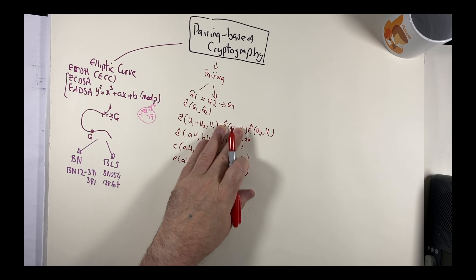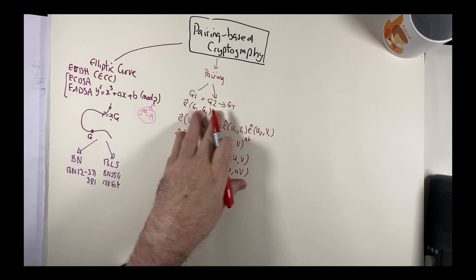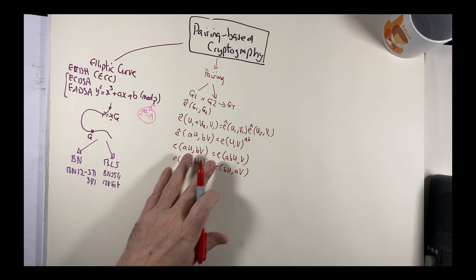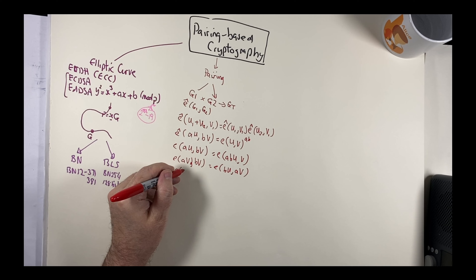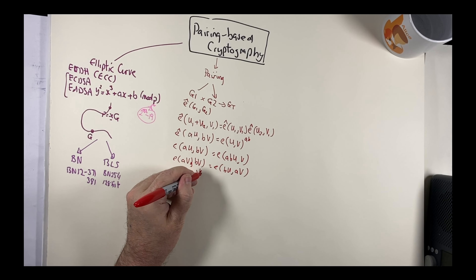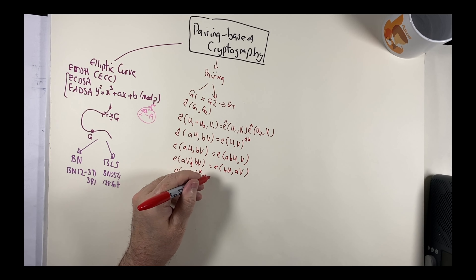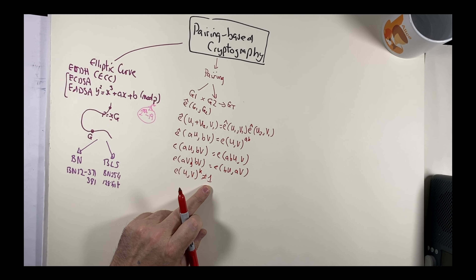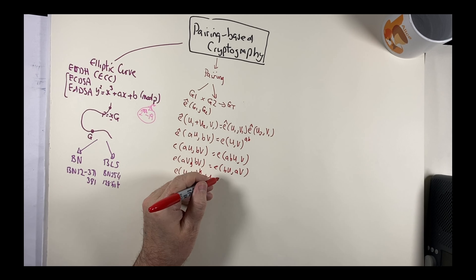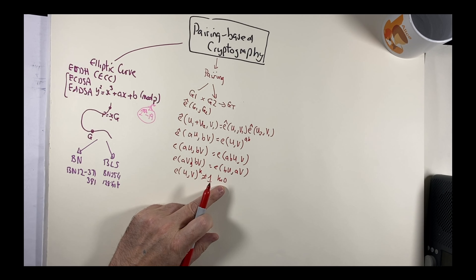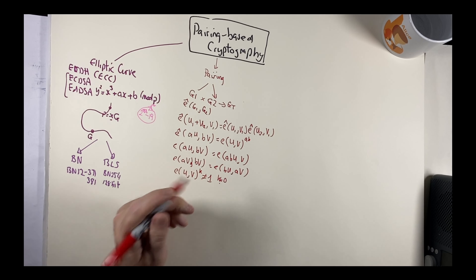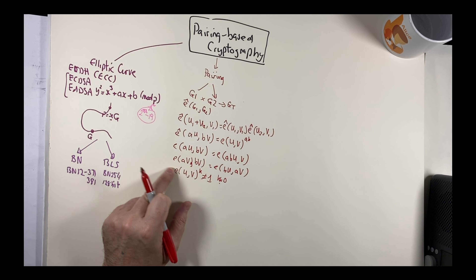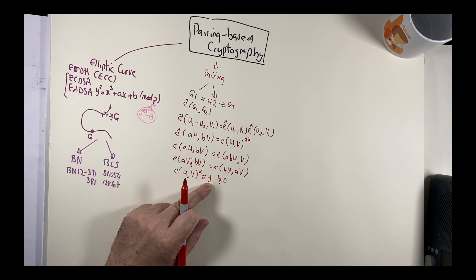We have these bilinearity mappings that allow special pairing relationships. An important property is non-degeneracy: the pairing of U and V raised to the power of k will not equal 1 unless k equals 0. When k equals 0, the pairing equals 1, but for any other k, the pairing will always produce a value that is not 1.